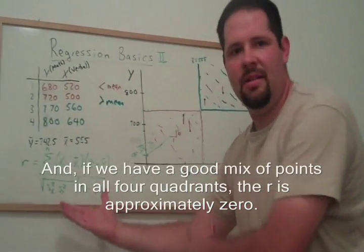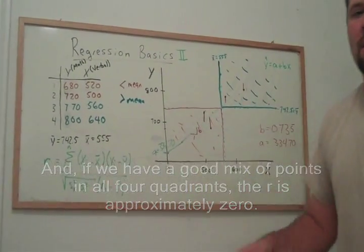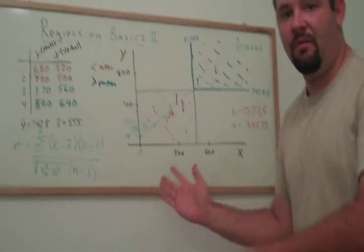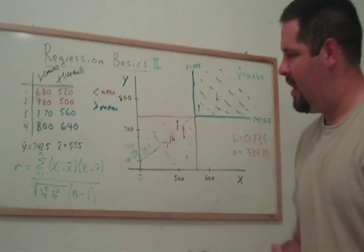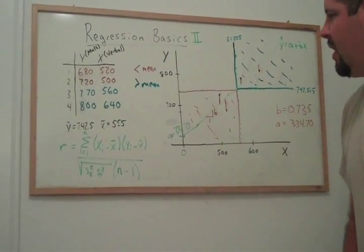So correlation, as you can see, describes the association, positive or negative, between the x variable and the y variable. And it gives us a good sense for what's going on.